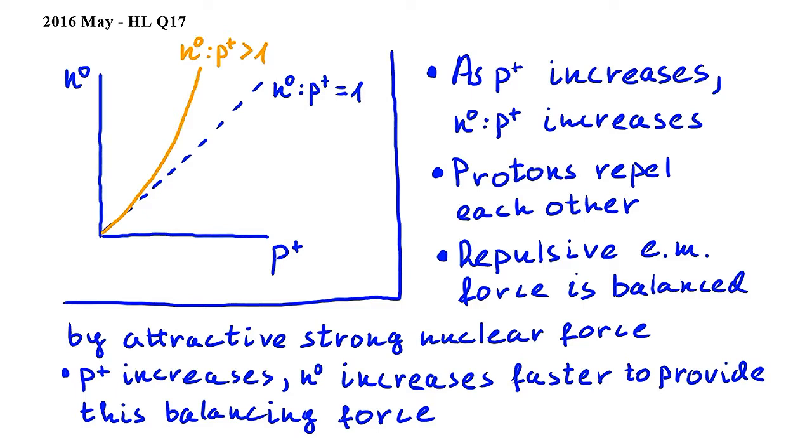As a nuclide becomes larger and larger by increasing proton and neutron numbers, certain protons and neutrons will be farther and farther away from each other within the nucleus. The electromagnetic force is not really affected by these increasing distances; however, the strong nuclear force diminishes with distance.